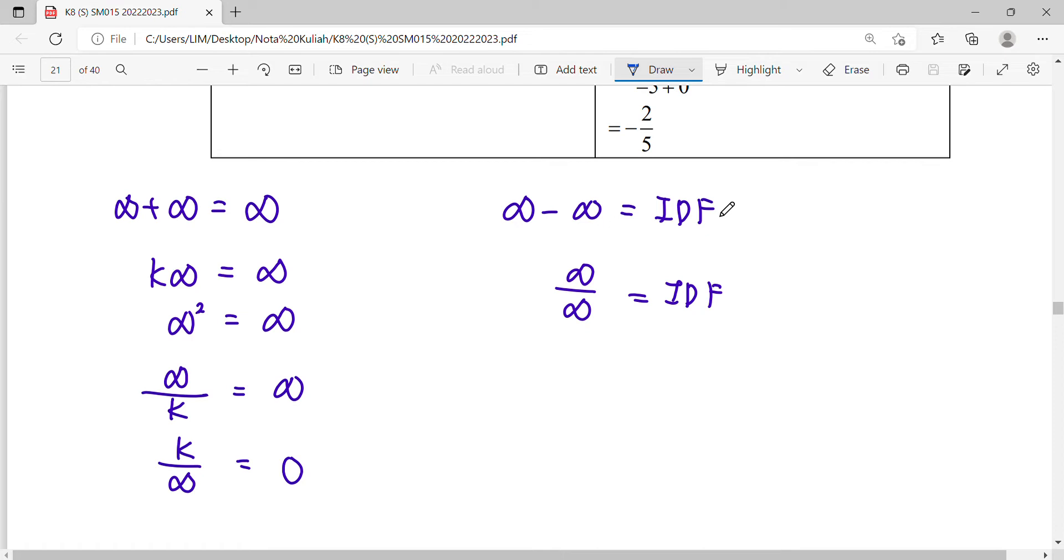A constant times infinity gives you infinity. Infinity squared, cubed, or to any power remains infinity. For division, infinity divided by infinity is IDF, but infinity divided by a number gives infinity.